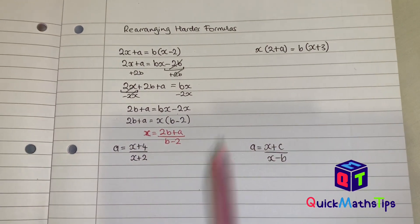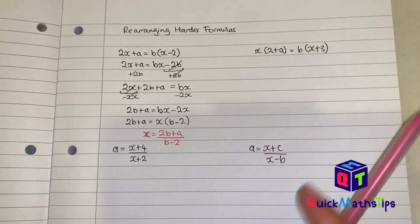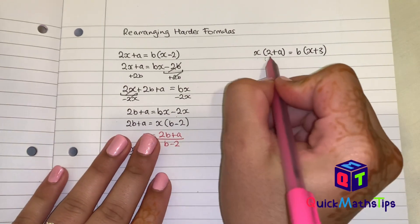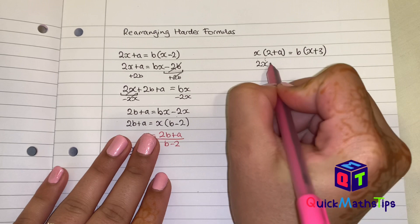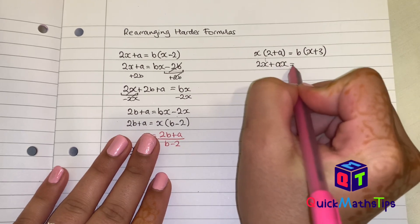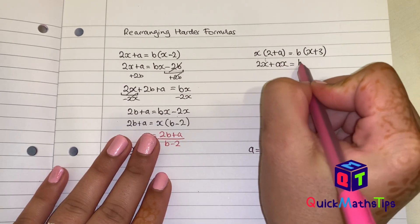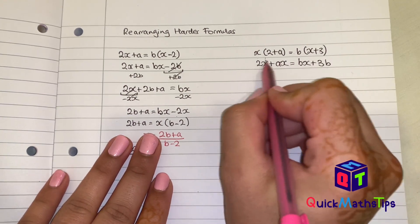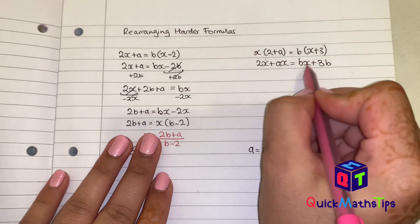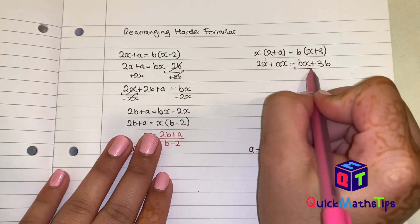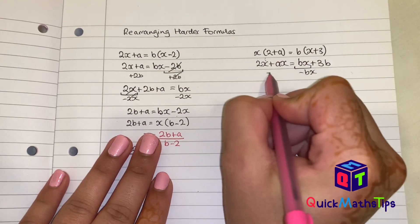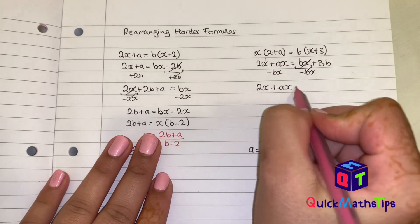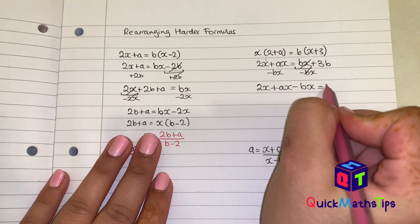Next question. I've got x outside the brackets and b outside the brackets, so the only thing I can do is expand. x multiplied by 2 gives 2x, x multiplied by a gives ax, b multiplied by x is bx, and b multiplied by 3 is 3b. I've got an x in each of these terms, so I'm going to subtract bx and take that away on both sides of the equation. I'm left with 2x plus ax minus bx equals 3b.